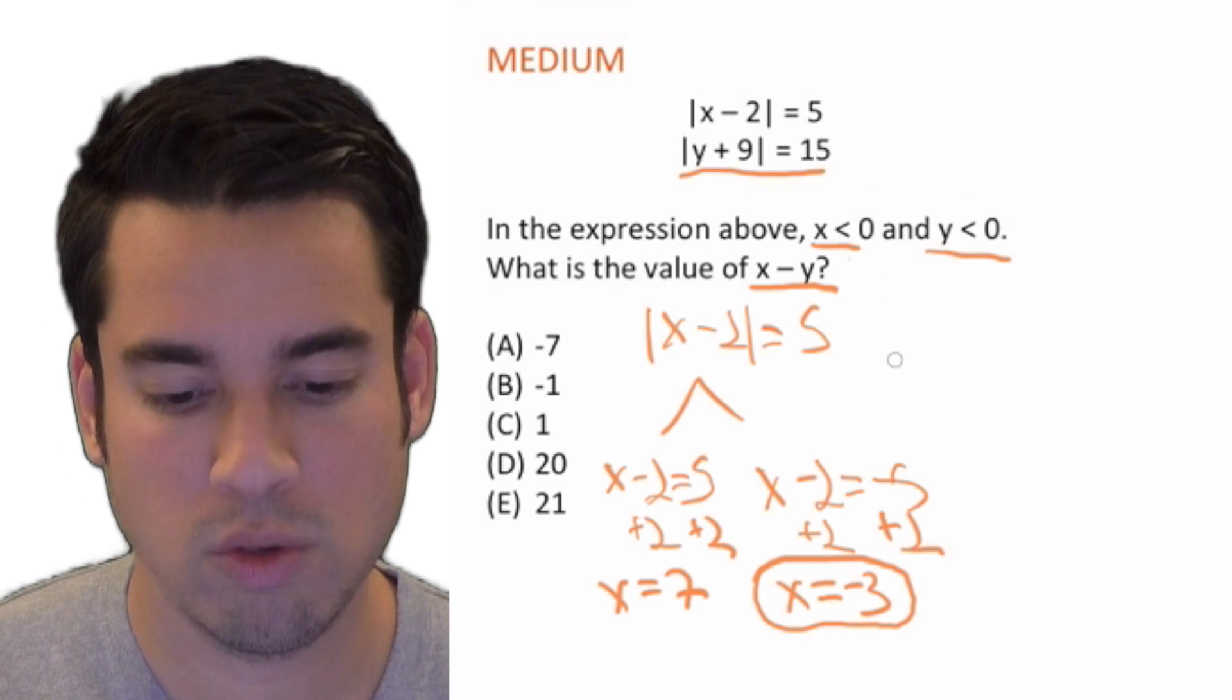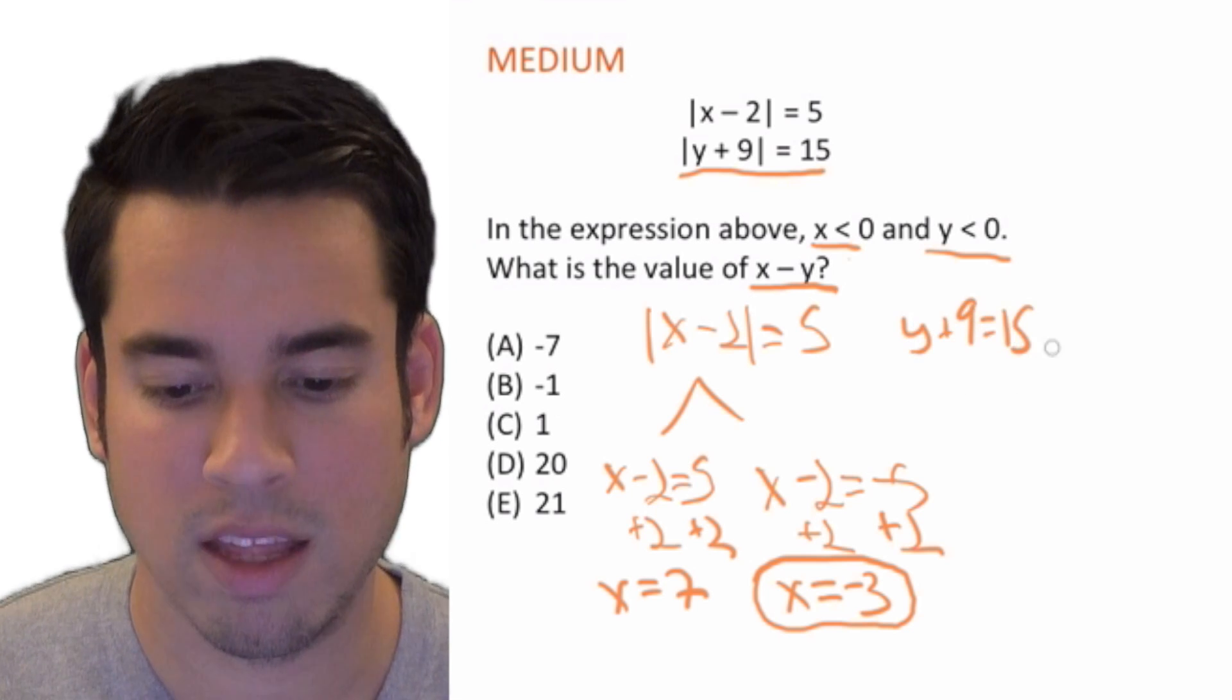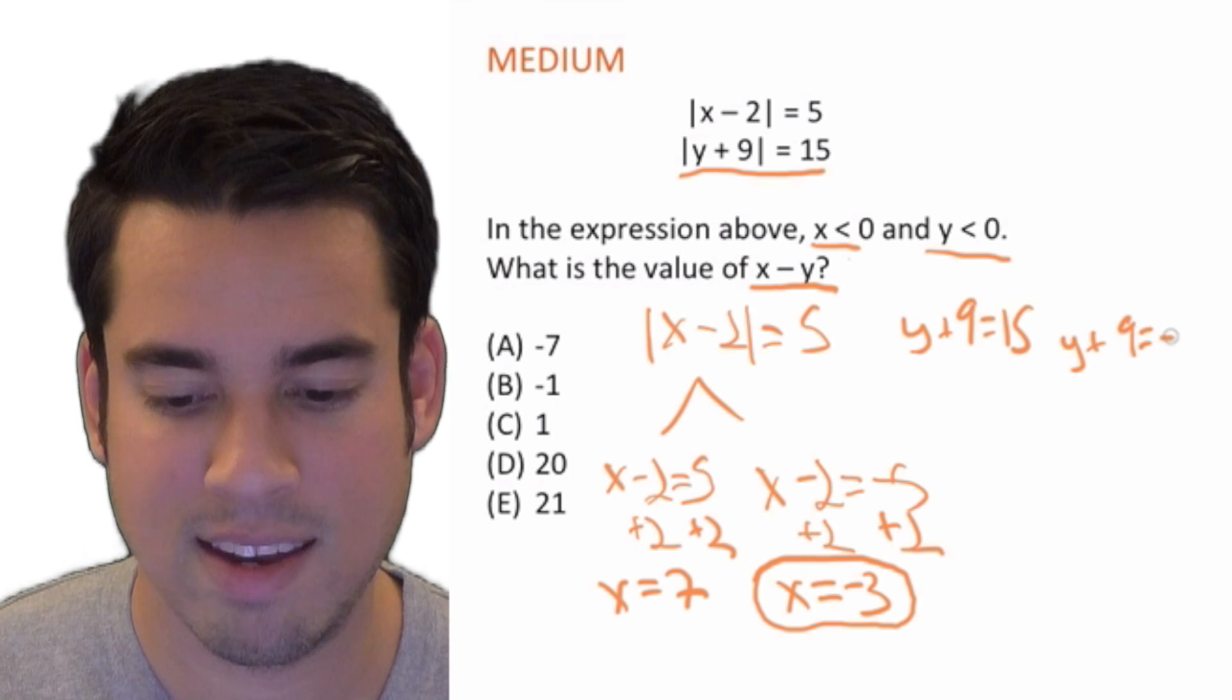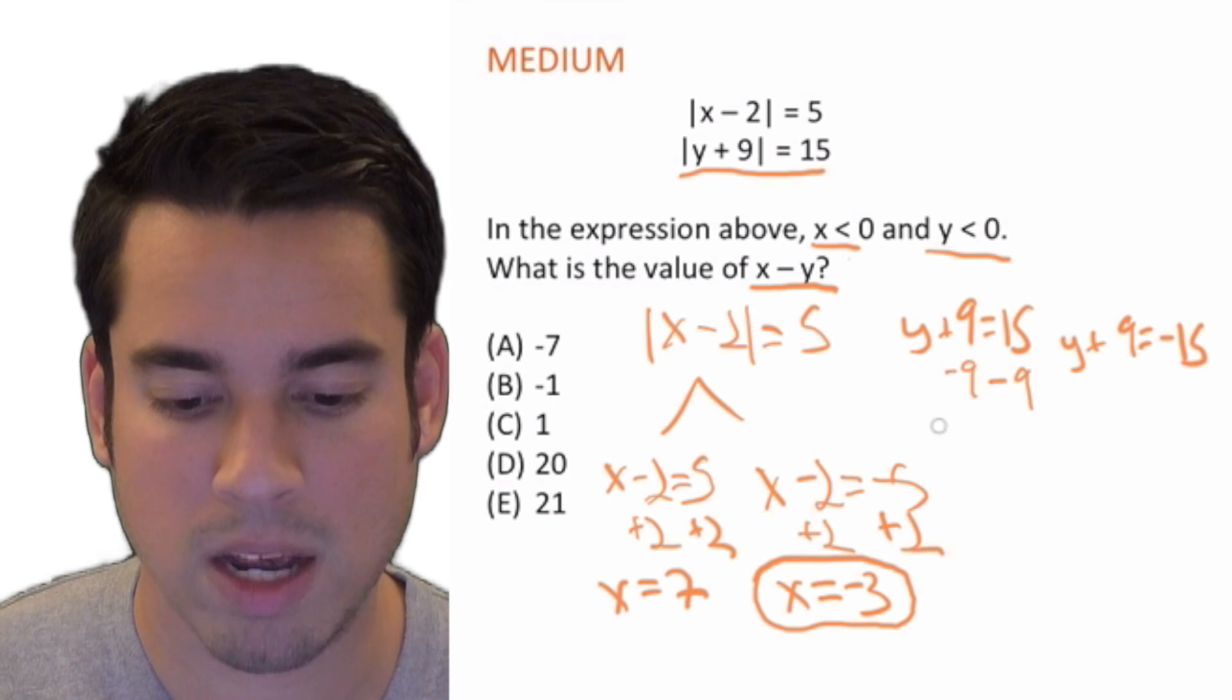So we'll do it right up here. We have first y + 9 = 15, and then we have y + 9 = -15. So same process, we're going to isolate y.